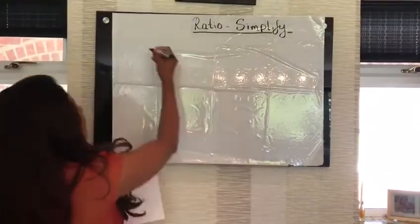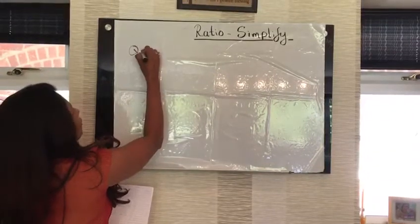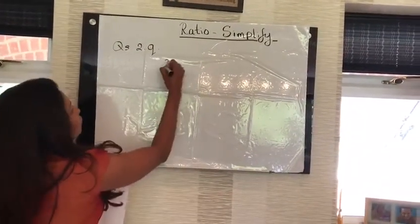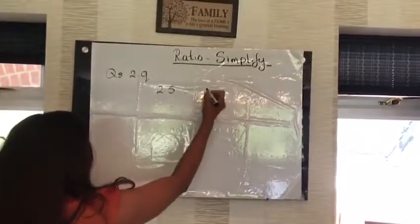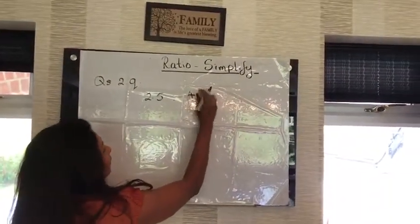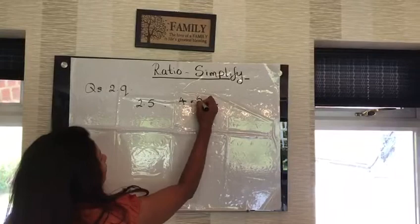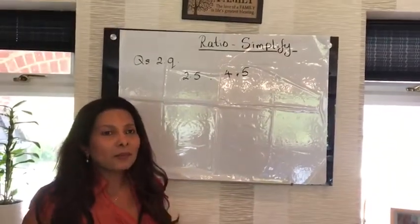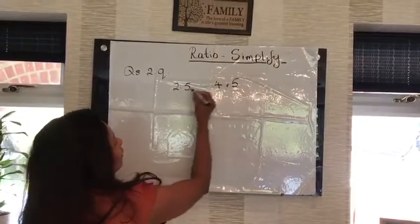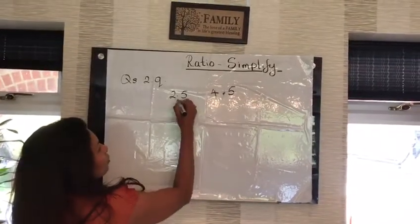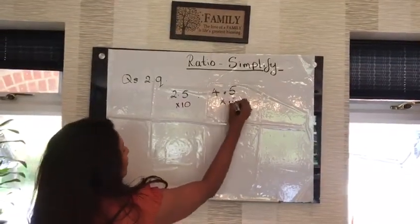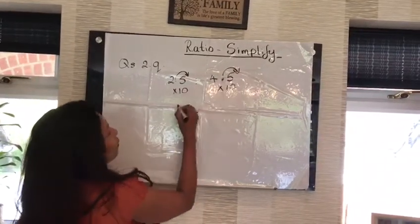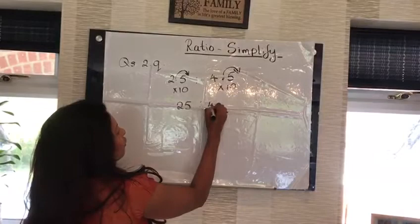Question 2Q has 2.5 to 4.5. Now you can't simplify when you have decimals, that's why I picked that up. First of all, you need to get rid of the decimals, so I need to times that by 10, times that by 10, just to get this decimal out of the way, which makes 25 to 45.